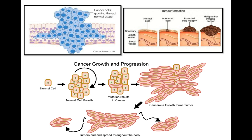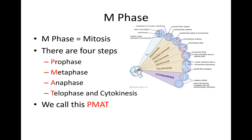Interphase is where the cell is growing, where we're creating a second copy of DNA, and where the cell is preparing to divide. The M phase — also called mitosis — is where that division actually occurs. There are four main steps, remembered as PMAT: prophase, metaphase, anaphase, telophase, and cytokinesis. Telophase and cytokinesis are essentially happening together and are often considered one step.